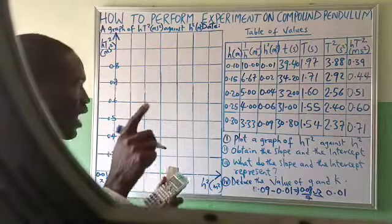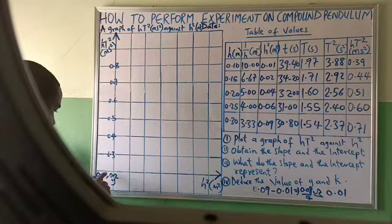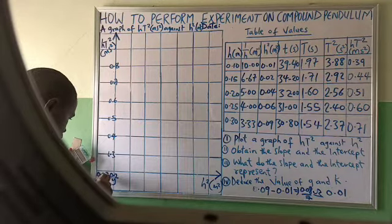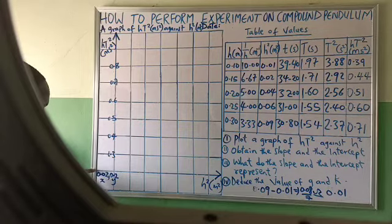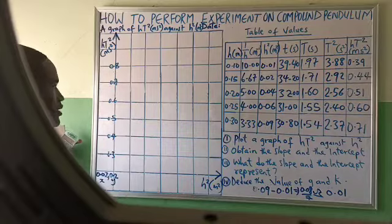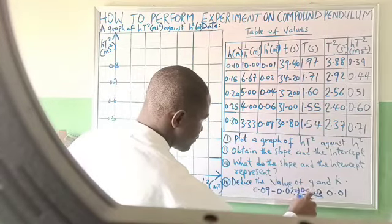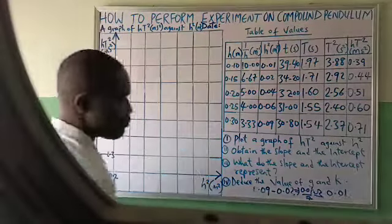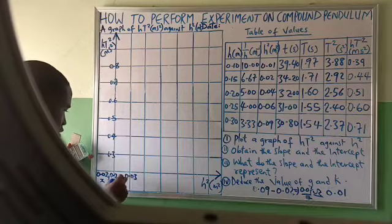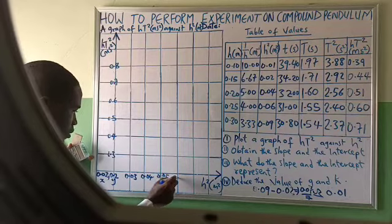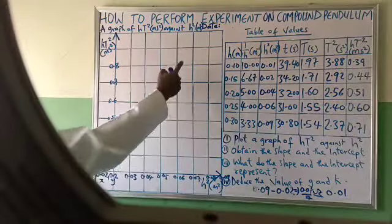Since 0.08 doesn't accommodate 0.09, I adjust and start the horizontal axis from 0.02 instead. So the horizontal starting point is 0.02, and each interval is 0.01. I recalculate: 0.09 minus 0.02 equals 0.07, divided by 7 spaces, equals exactly 0.01 per space. The horizontal axis now reads: 0.02, 0.03, 0.04, 0.05, 0.06, 0.07, 0.08, 0.09 — accommodating all values.